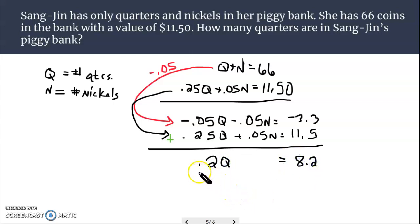I now have one equation, one variable. I'll divide both sides by 0.2. 8.2 divided by 0.2 Q is 41 quarters. If we needed to solve for N, we certainly could do that. But we're just asking for how many quarters Sang-Jin has.